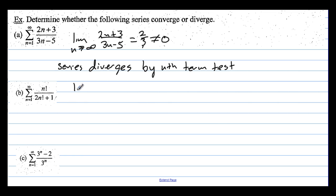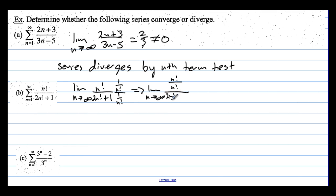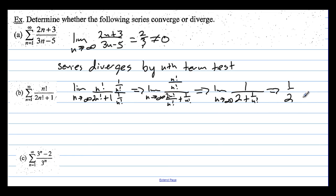Example B: we take the limit as n approaches infinity of n! / (2n! + 1). Multiplying top and bottom by 1 over n! gives us 1 / (2 + 1/n!). As n approaches infinity, 1/n! goes to 0, so the limit equals 1/2. Since 1/2 does not equal 0, the series diverges by the nth term test.